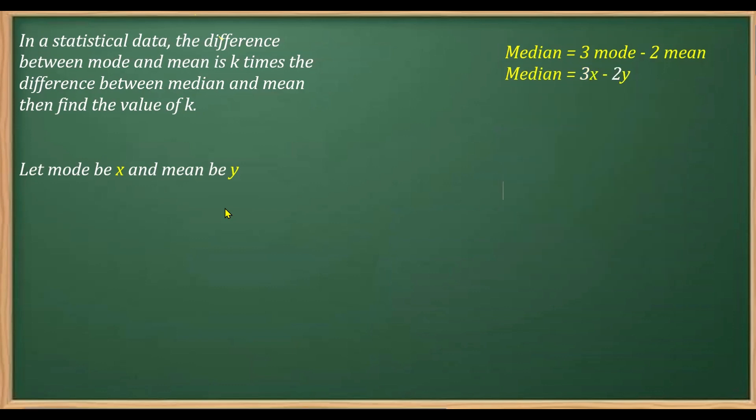Now check here what we can do. Let's say if I place the value here, what you will get? Replacing mode with x and mean with y, we'll get this relation. This is the relation obtained.